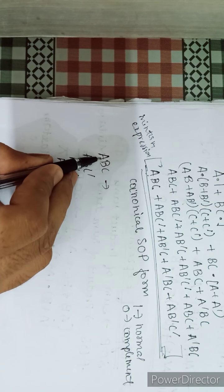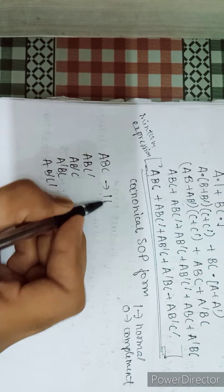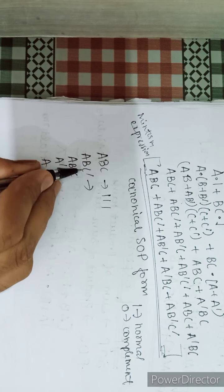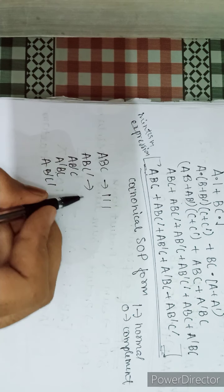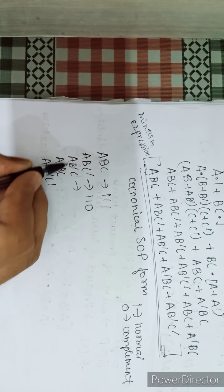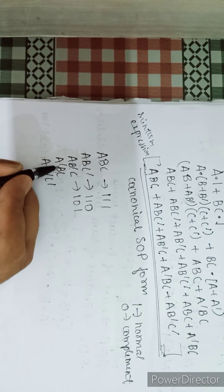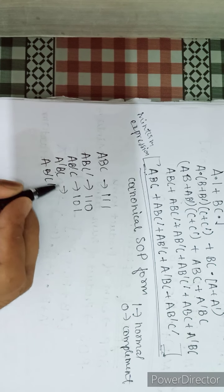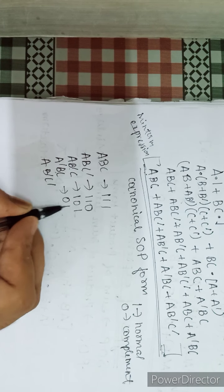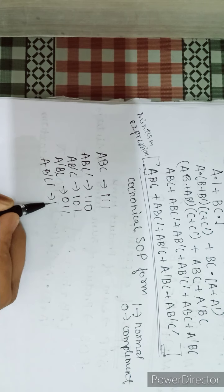For ABC: A normal, B normal, C normal → 1,1,1. For ABC-bar: A normal, B normal, C complement → 1,1,0. For AB-bar C: A normal, B complement, C normal → 1,0,1. For A-bar BC: A complement, B normal, C normal → 0,1,1. For AB-bar C-bar: A normal, B complement, C complement → 1,0,0.